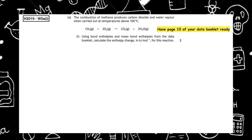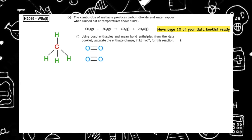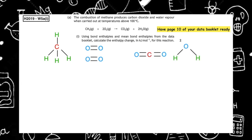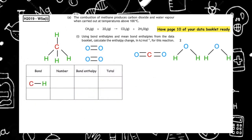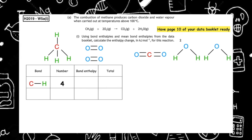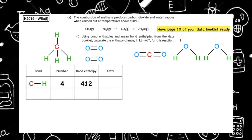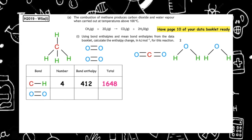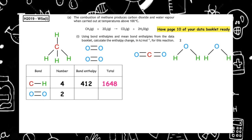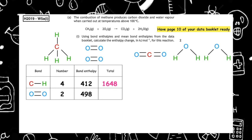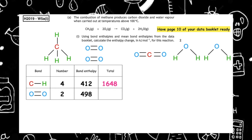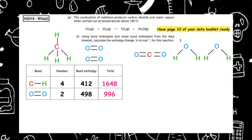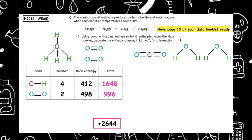For this next example, draw out the shapes of the molecules given in the balanced equation. On the left hand side we have C–H bonds — 4 of them — with an enthalpy of 412, giving 4 × 412 = 1648. We also have an O=O double bond; there are 2 of those with a bond enthalpy of 498, giving 2 × 498 = 996. Adding these together gives a total of +2644.